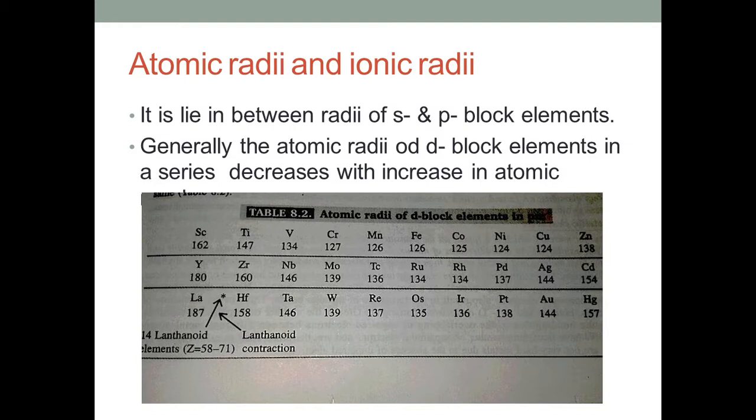Now we look at general properties and trends for d-block elements. First is atomic radii and ionic radii. The radius of an atom is called atomic radii. The atomic radii of d-block elements lies in between the radii of s and p-block elements. It is intermediate - s-block has maximum radii and p-block has minimum radii.